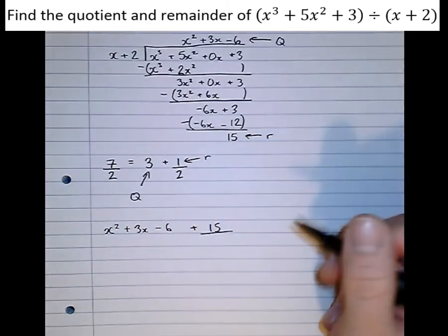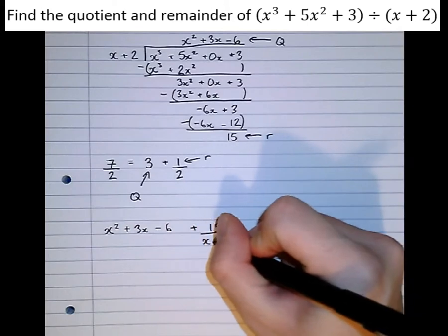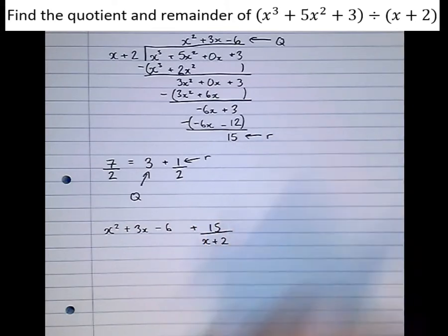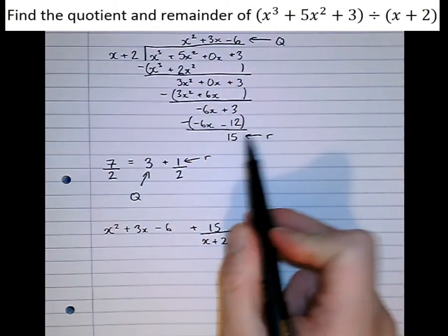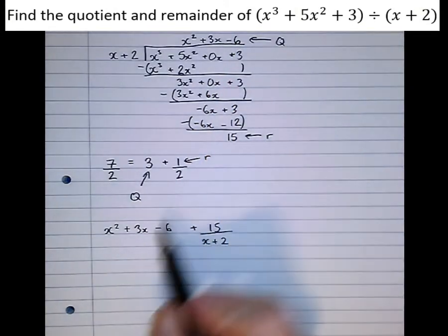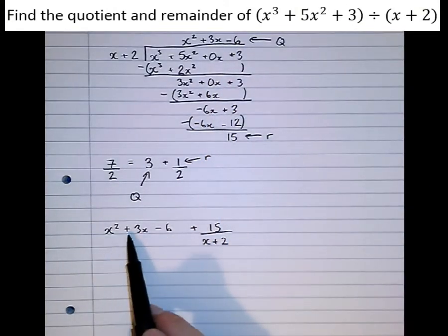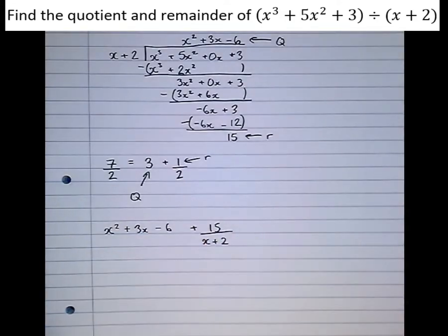Which hasn't been yet, but needs to be, divided by x plus 2. So the quotient x squared plus 3x minus 6, the remainder is 15. And the answer to the division itself is x squared plus 3x minus 6 plus 15, the remainder, over x plus 2.